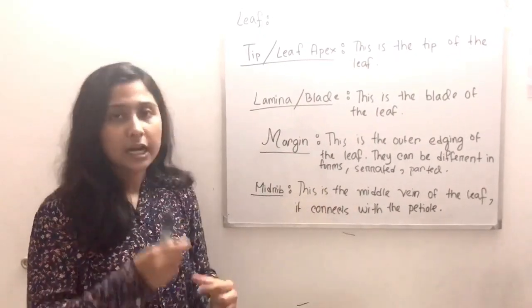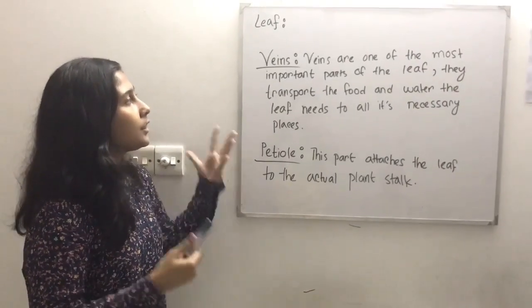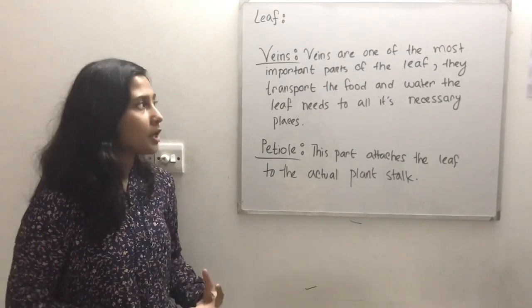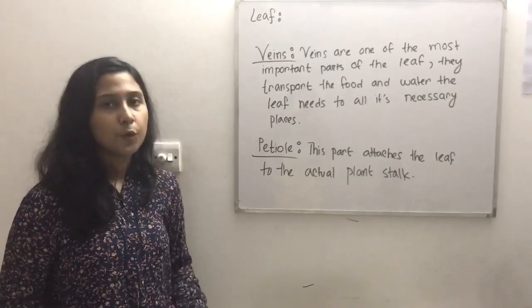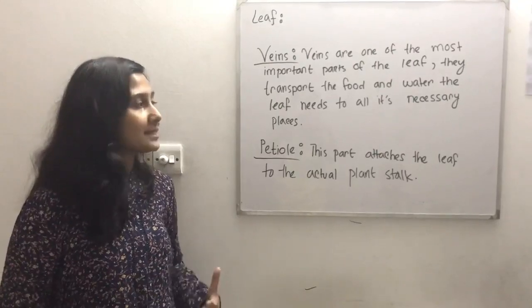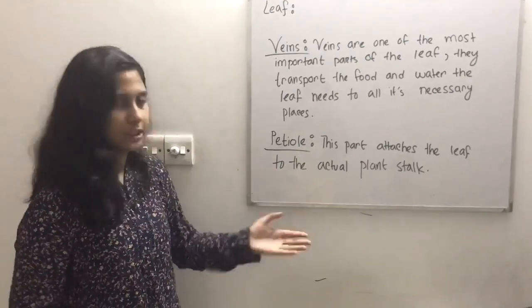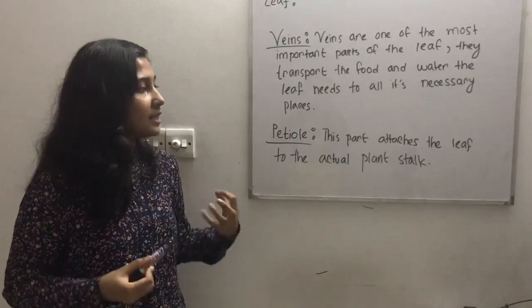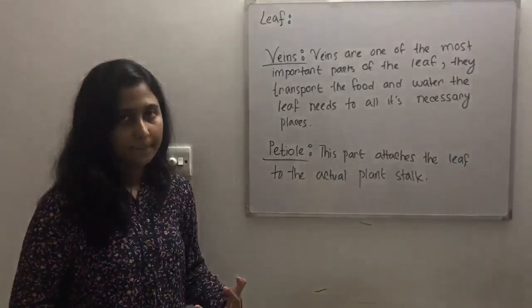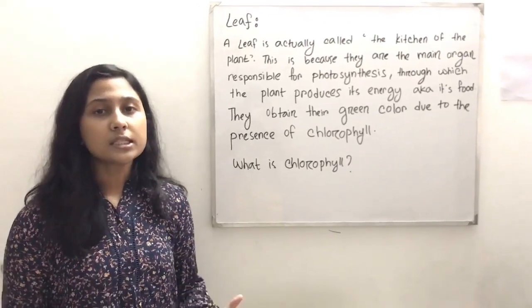The midrib is the middle vein of the leaf and it connects with the petiole. The veins are one of the most important parts of the leaf — they transport the food and water the leaf needs to all its necessary places. The petiole is the part that attaches the leaf to the actual plant stock.